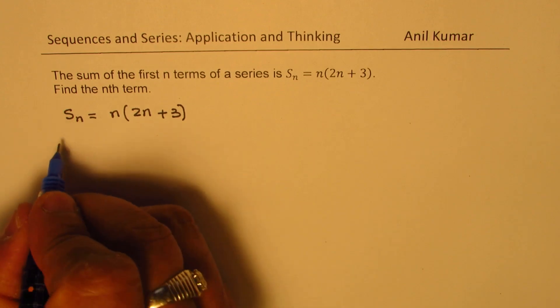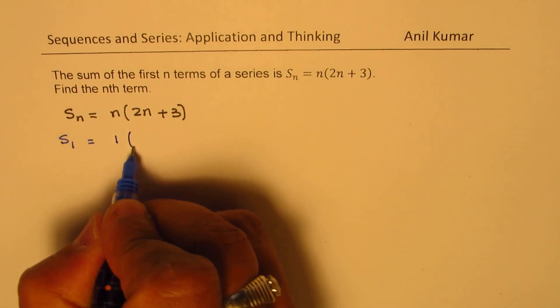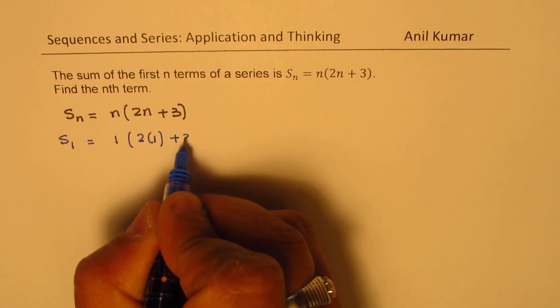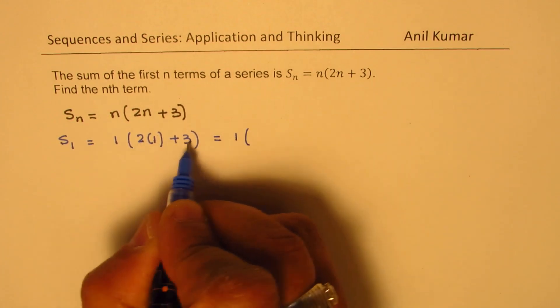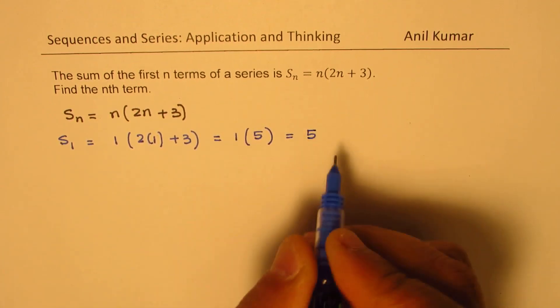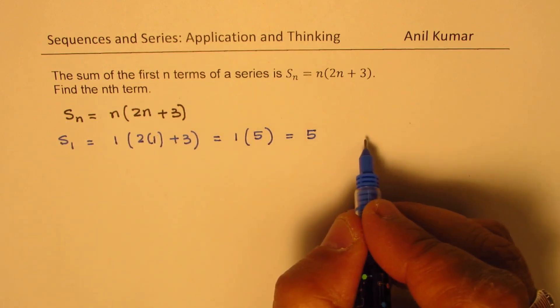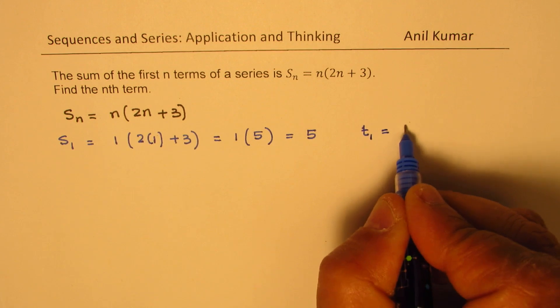So the first term will be sum of itself. So it will be 1 times 2 times 1 plus 3, which is equal to 1 times 2 plus 3 is 5. So from here we can say that the term number 1 is basically equal to 5.